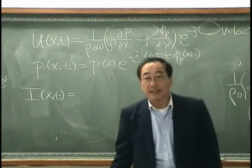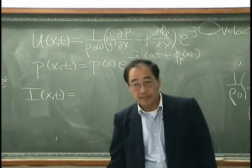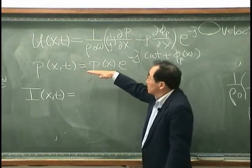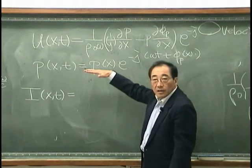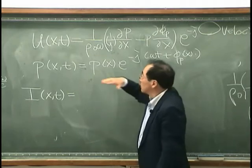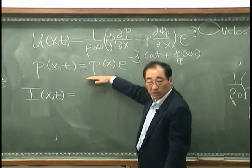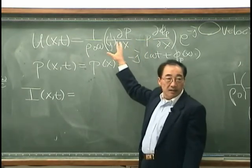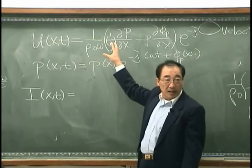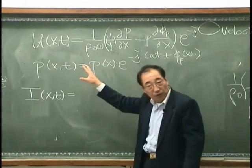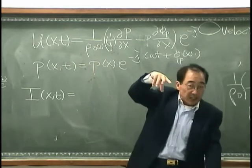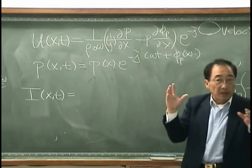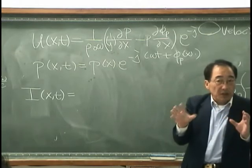That we call active intensity. And the intensity that has phase difference with the real part of this pressure, that is the intensity that pressure and the velocity have different phase.